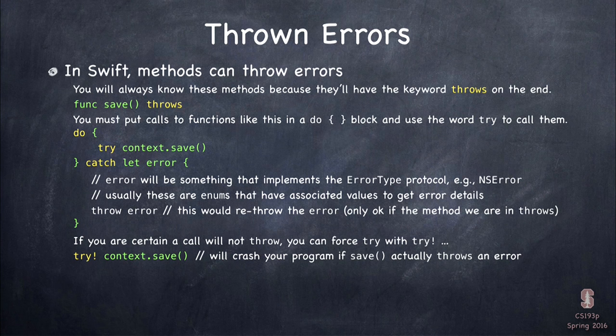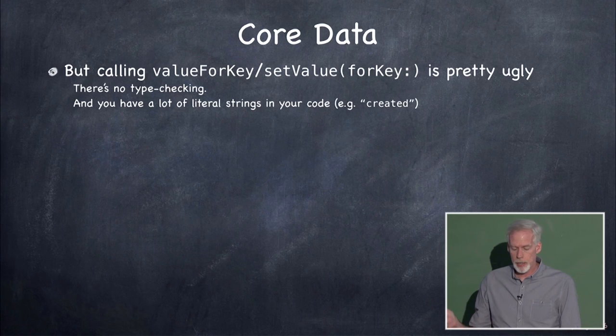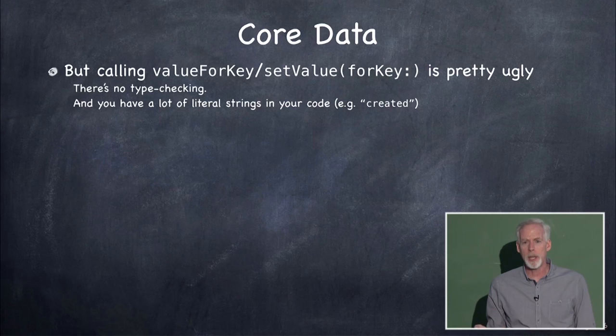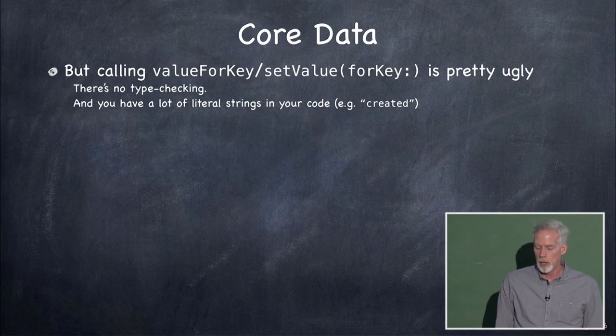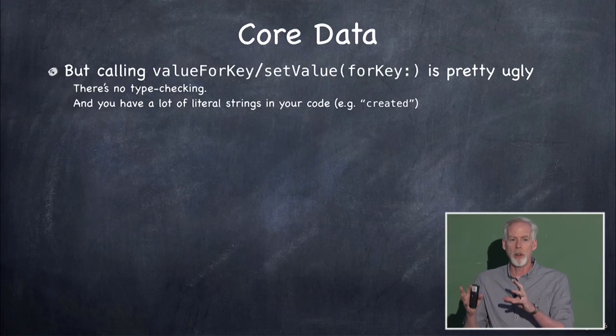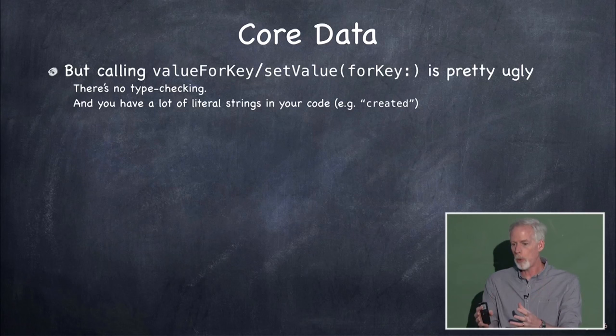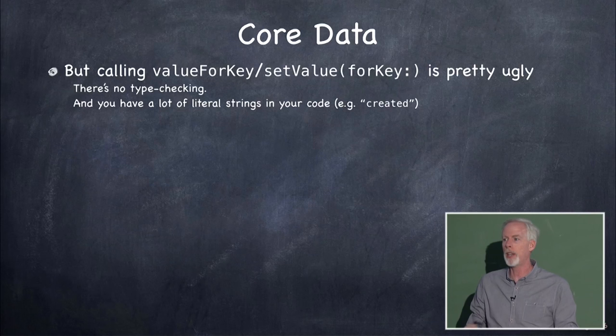That's throwing errors in Swift — there aren't a lot of things that throw errors, but you will run across them in some homeworks and certainly in your final project. Now let's get back to Core Data. Calling valueForKey and setValueForKey is pretty ugly — there's no type checking since the argument type is AnyObject, and you have literal strings like 'text', 'created', 'ID' scattered through your code. What you really want is vars, so you can say tweet.text equals — that's object-oriented.